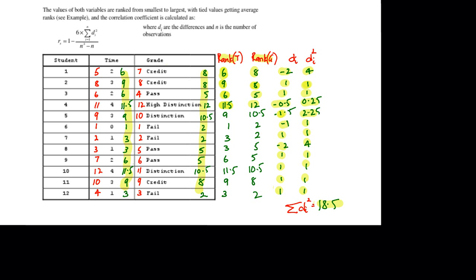And finally we add these values up to give us a sum of the differences between the ranks squared. This is our sigma di squared.